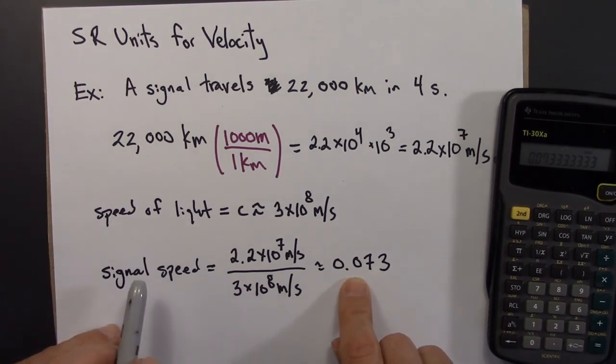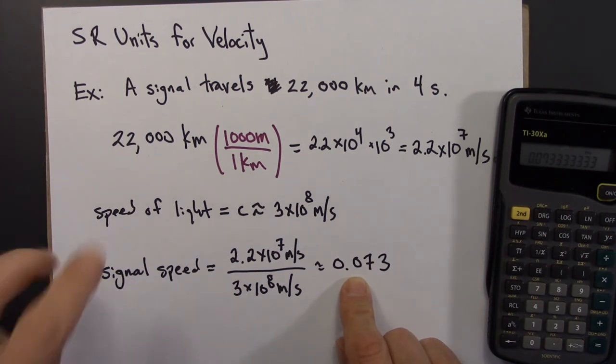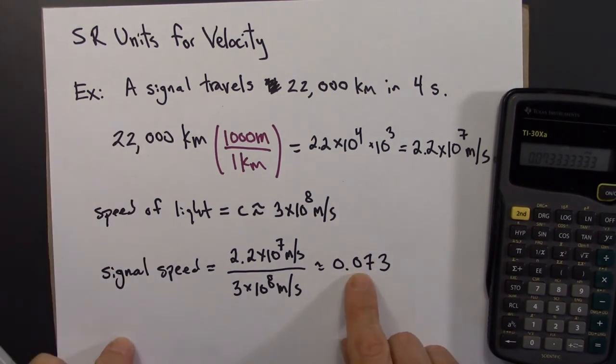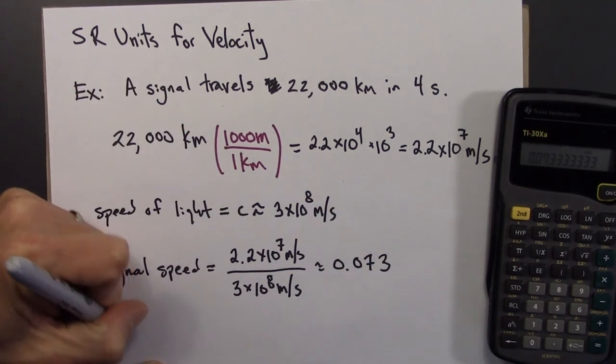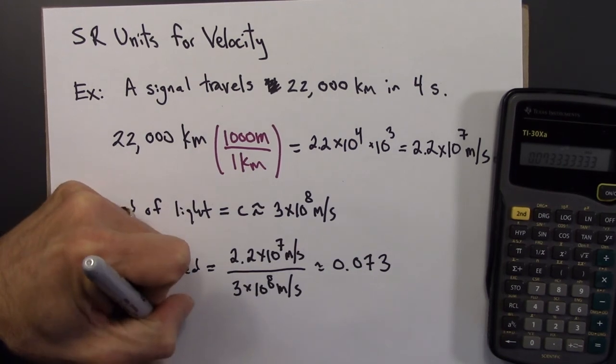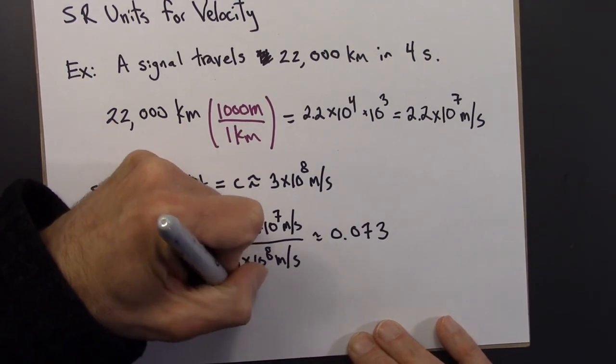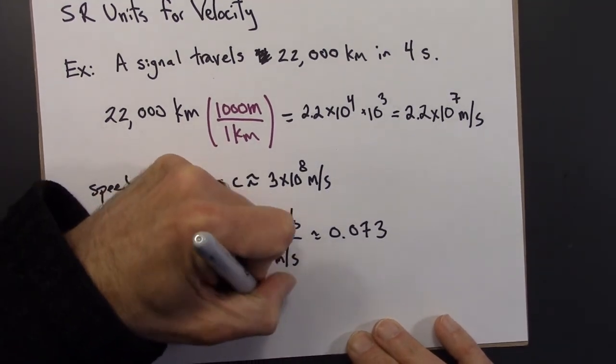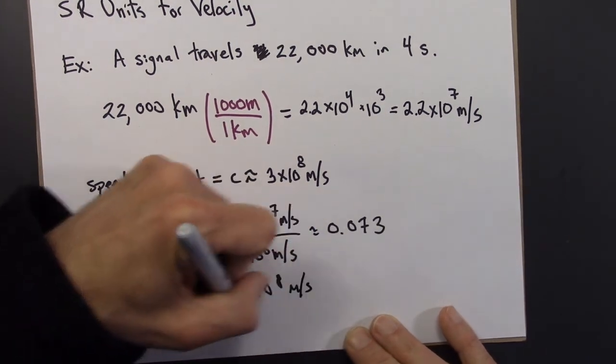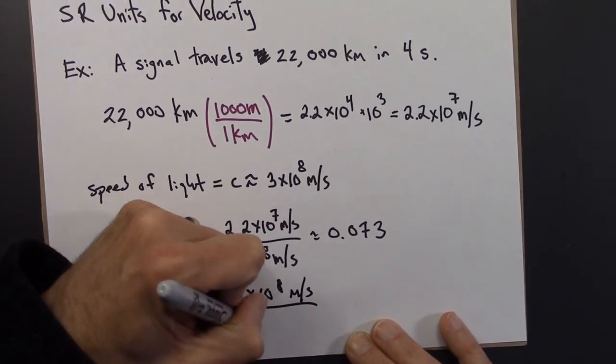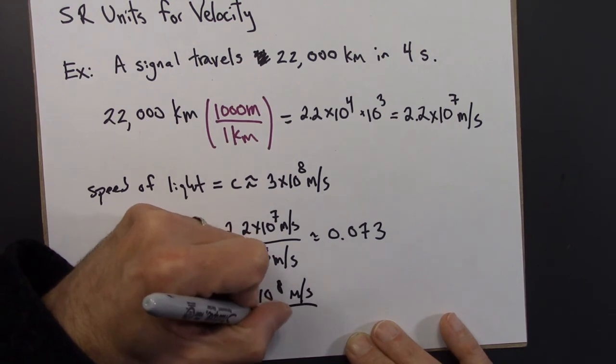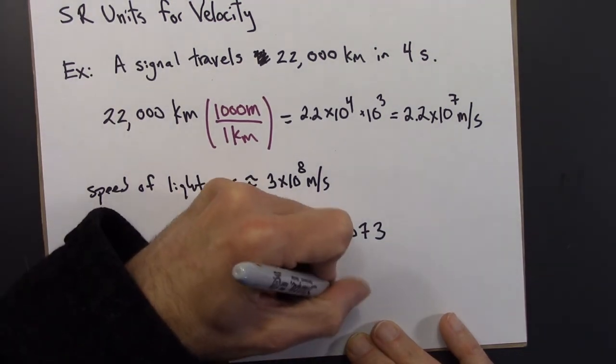Another way to say this is in every second of time, this signal would travel only 0.073 light seconds. The speed of light, on the other hand, in these units, light speed, in this way of thinking of things, it's the speed of light divided by the speed of light, which is 1.